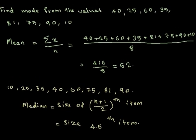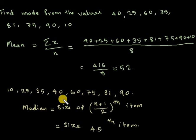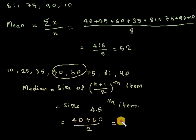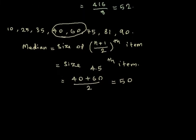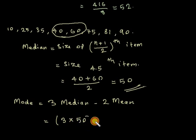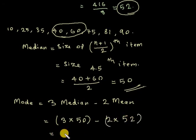The 4th item is 40 and the 5th item is 60. Their average is 40 plus 60 divided by 2, which equals 50. Now apply the formula: mode equals 3 median minus 2 mean, which is 3 into 50 minus 2 into 52, giving the answer 46. So 46 is the mode.